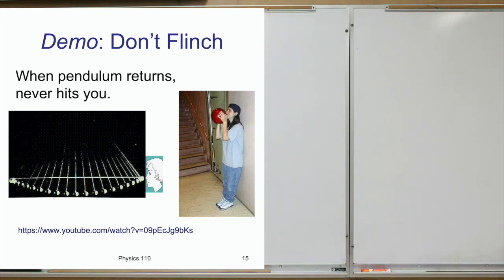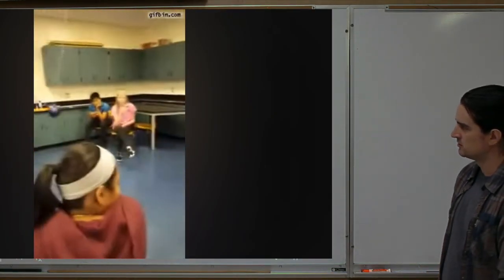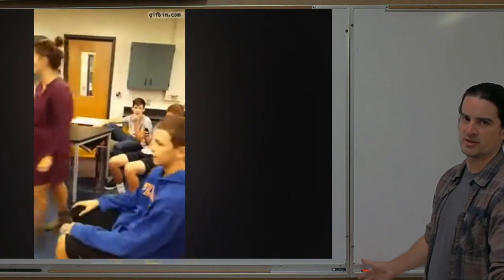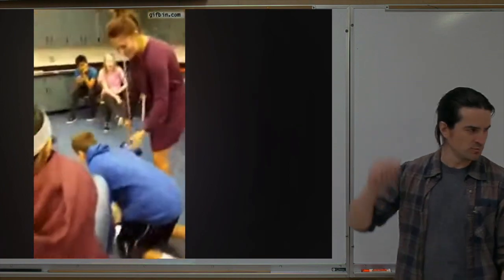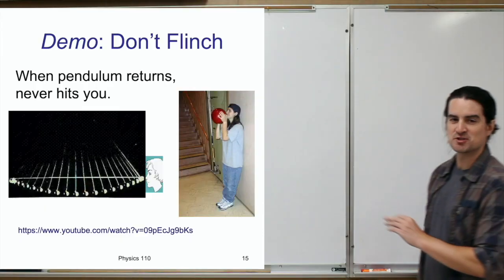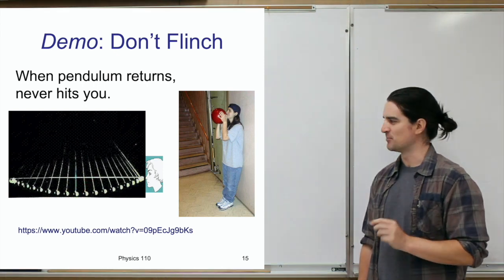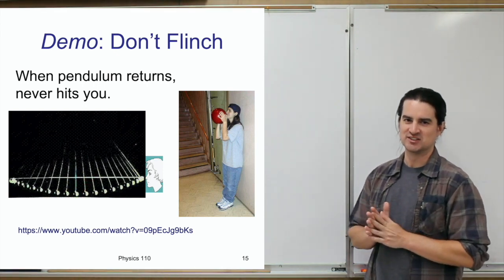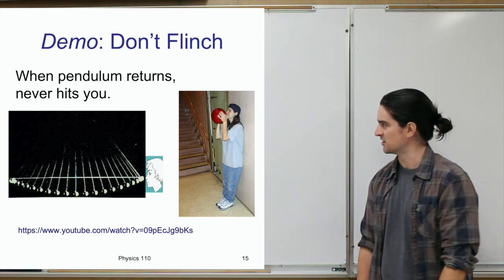You may have seen a demonstration where a large pendulum — often a bowling ball — is held up close to someone's face and released. Because the pendulum can never go higher than it started, it swings out and comes back to essentially the same spot, maybe slightly lower due to air resistance and friction. In the video, the ball comes back safely — though one person moved into the path of the pendulum, which caused a problem. The pendulum wouldn't have hit him if he had stayed still.